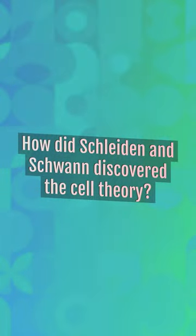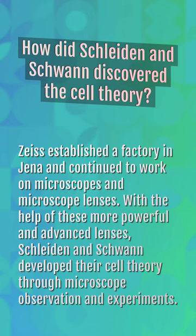How did Schleiden and Schwann discover the cell theory? Zeiss established a factory in Jena and continued to work on microscopes and microscope lenses. With the help of these more powerful and advanced lenses, Schleiden and Schwann developed their cell theory through microscope observation and experiments.